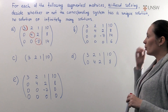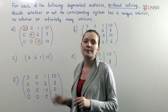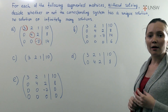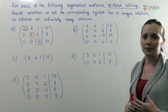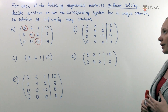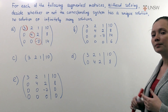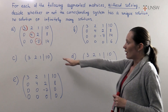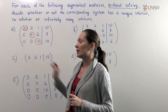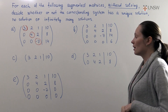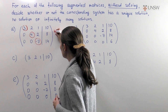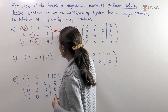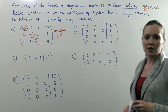Therefore we look at the remaining columns. If all remaining columns are leading columns then the system has a unique solution. If at least one column is a non-leading column then the system has infinitely many solutions. In our case all three columns are leading columns, therefore we conclude that there is a unique solution for the corresponding system.